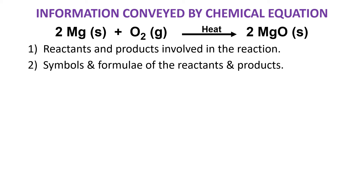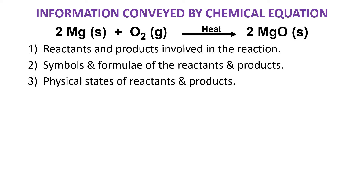Secondly, it tells us the symbols and formulae of the reactants and products. The symbol of magnesium is Mg because Mg is a metal, so it will have a symbol. Whereas oxygen O₂ is a formula — the symbol is O and the formula is O₂. Symbol is different and formula is different. It also tells us the formula of the product, magnesium oxide, that is MgO.